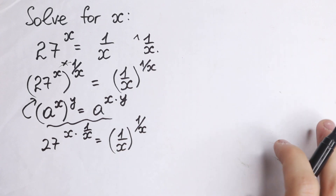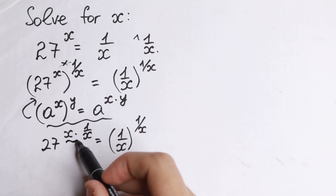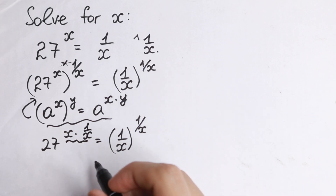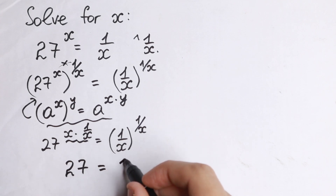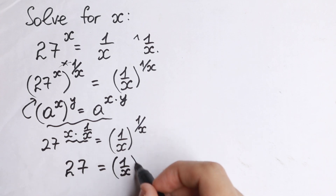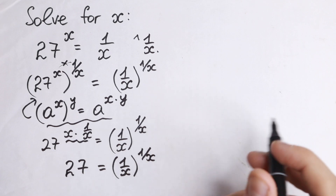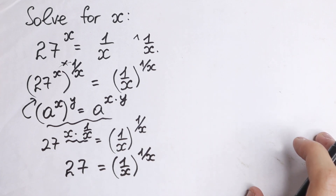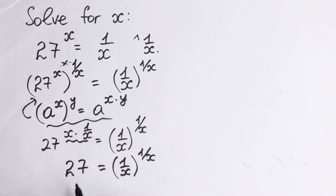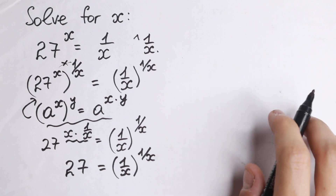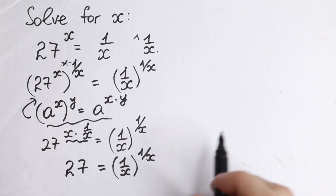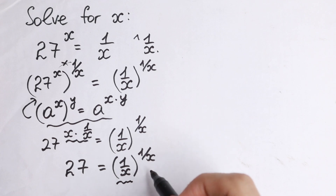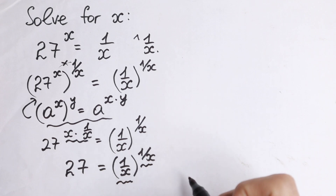Take a look closely: x times 1 over x equals 1. So as a result, on the left-hand side we will have only 27, equal to 1 over x to the power 1 over x. We just simplified this a little bit — on the left-hand side we have the constant 27, and on the right-hand side we have 1 over x to the power 1 over x, which means we have the same base and same exponent.